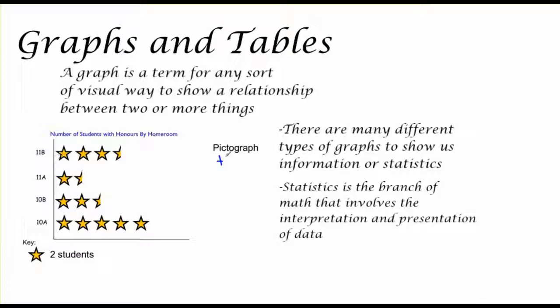So we take this information and this data and we're able to organize it into a graph. Now with this graph, we are looking at the number of students with honors by homeroom. On the left side, we have the homeroom, the 11B, the 11A, and the key down at the bottom shows us that each star is worth two students.